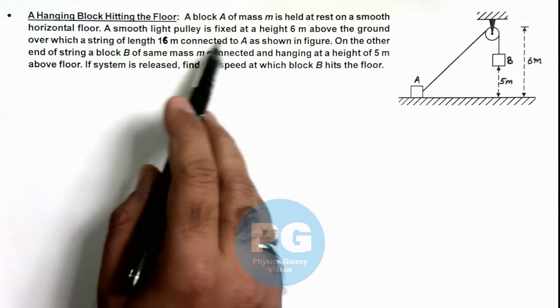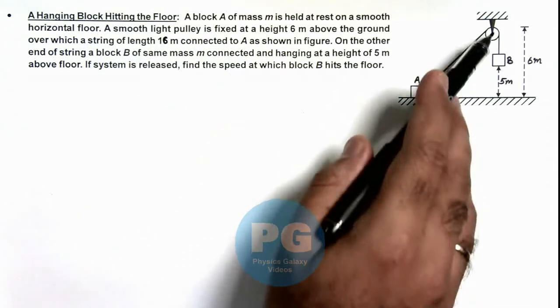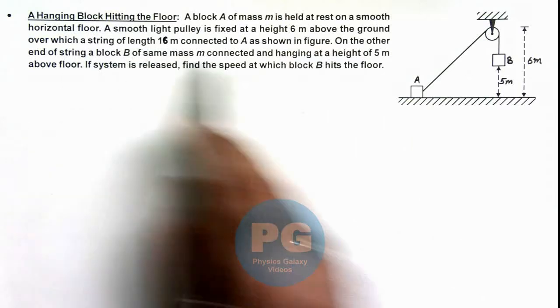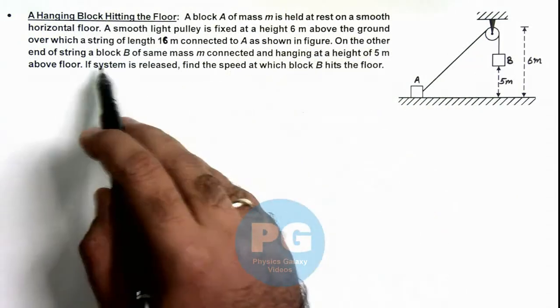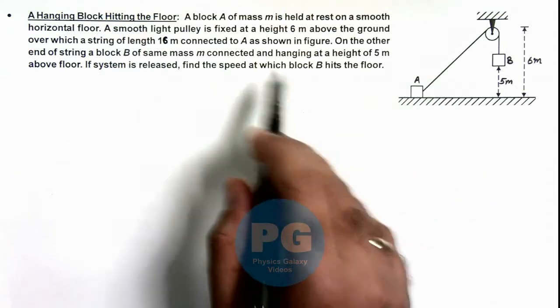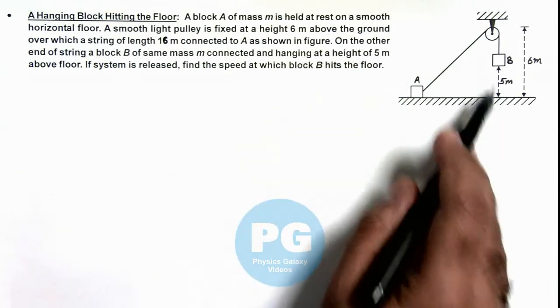A smooth light pulley is fixed at a height 6 meters above the ground, over which a string of length 16 meters is connected to A. On the other end of the string, a block B of same mass is connected and hanging at a height of 5 meters above the floor.